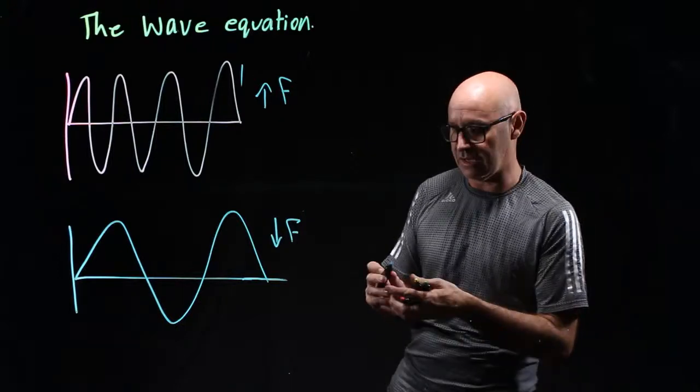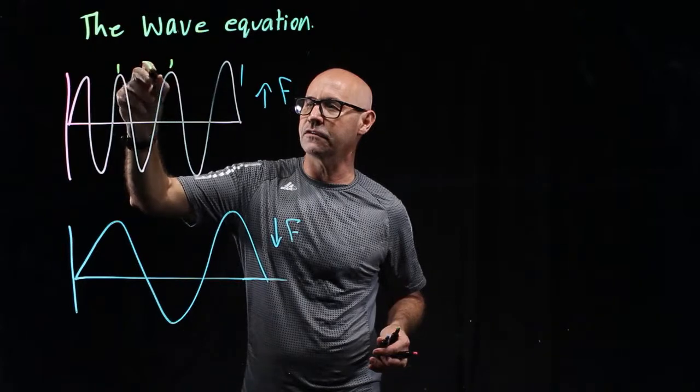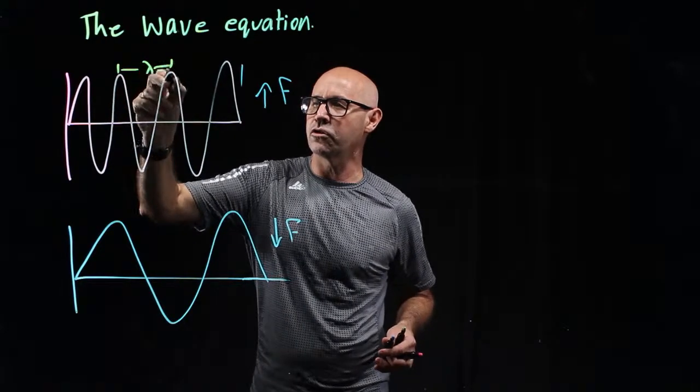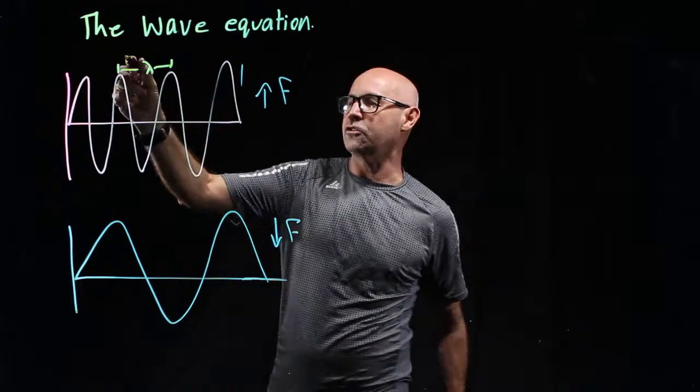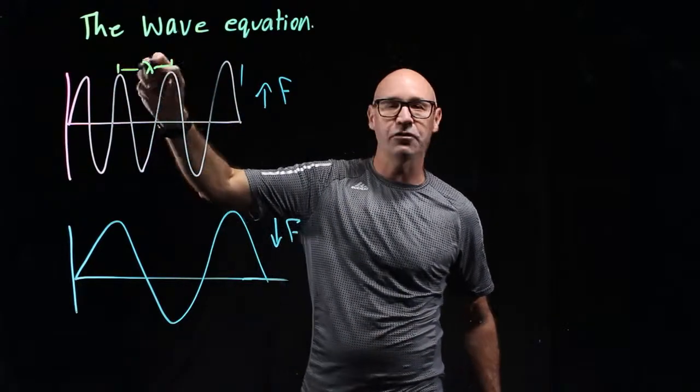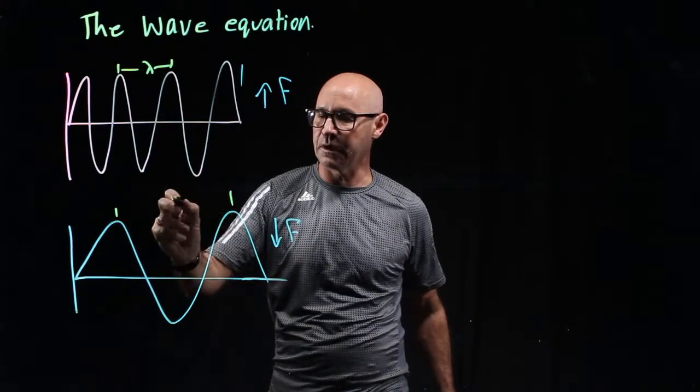Something else we can see, though, is the wavelength. The wavelength is the distance between the same points on consecutive waves. Often it's good to measure from the peak or the crest. And you can see that this has got a shorter wavelength than this one.